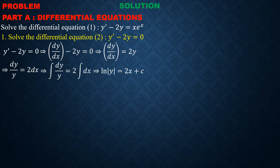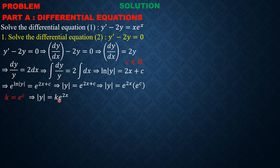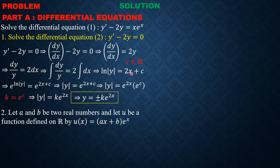Separating the variables gives dy/y equals 2 dx. Integrating both sides, the left-hand side gives the natural log of the absolute value of y, and the right-hand side gives 2x plus a constant of integration c. Taking exponents on both sides, the absolute value of y equals e^(2x+c). Decomposing and letting k equal e^c, we get |y| equals k·e^(2x), so y equals ±k·e^(2x).